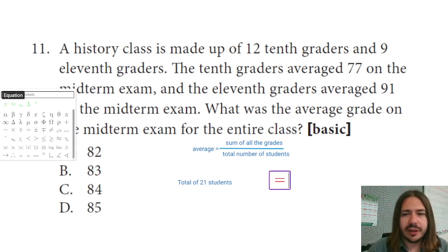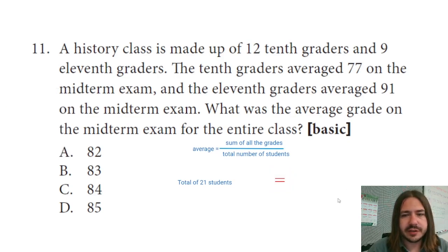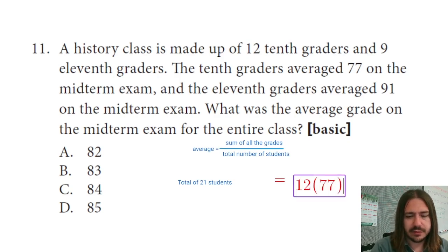The hardest part here. So it says there are 12 10th graders, and their average was a 77. But we can basically say that each one of them got a 77 and still have the same average, right? So we're going to multiply 12 students by 77, right? Because each one of them, you could say, got a 77.